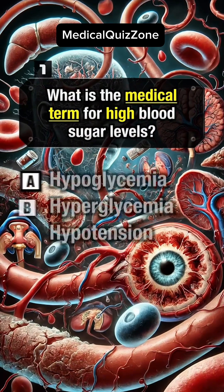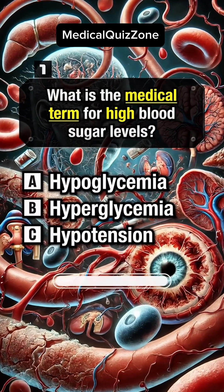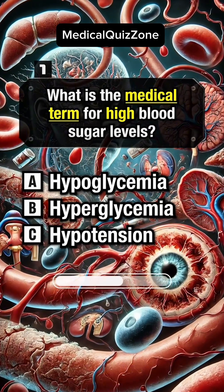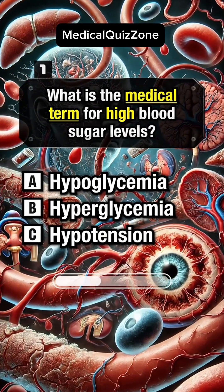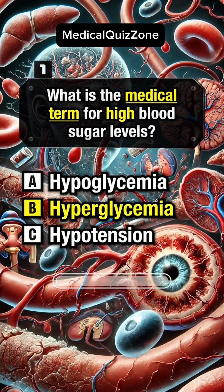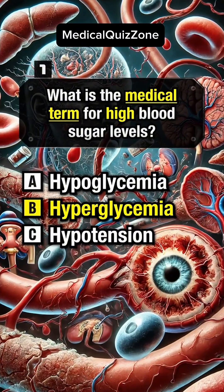What is the medical term for high blood sugar levels? Answer B: Hyperglycemia.